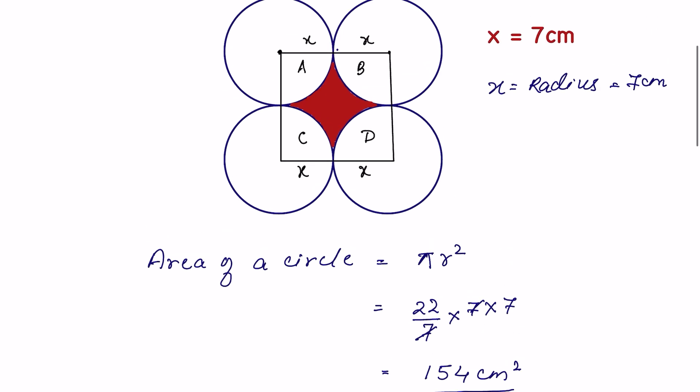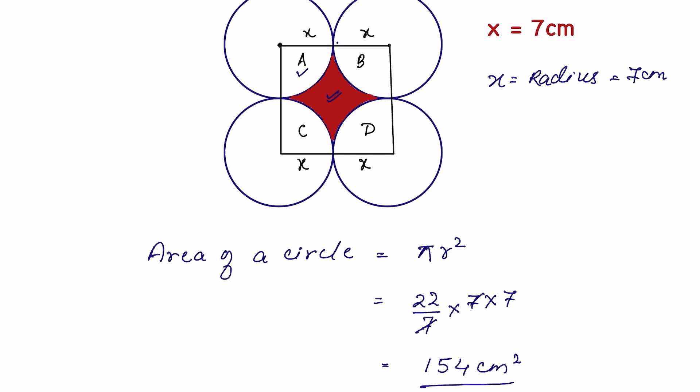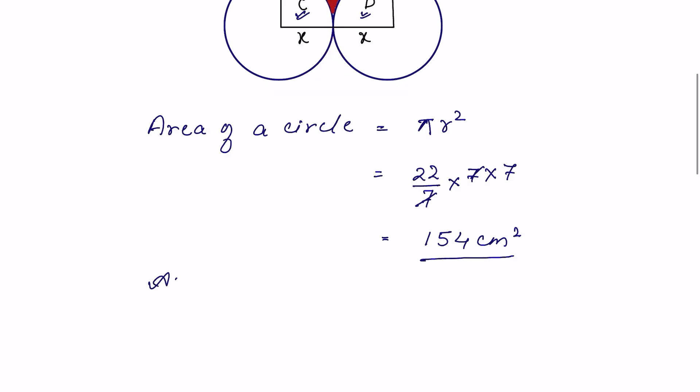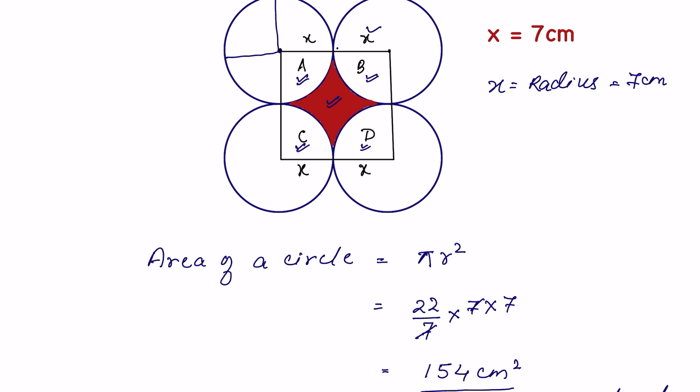We have to find this area of this shaded region. Now you can see that there are four quadrants, and area of a circle is also equal to sum of the area of the four quadrants because four quadrants combine together to become a circle. And since each of the circles have the same radius, that means each of this quadrant has the same area.